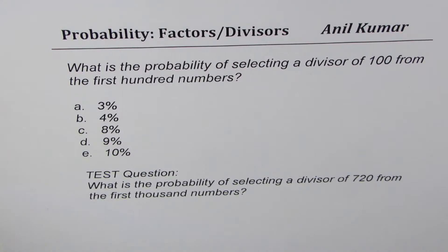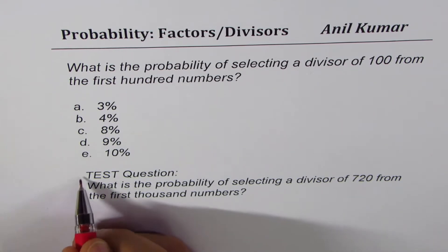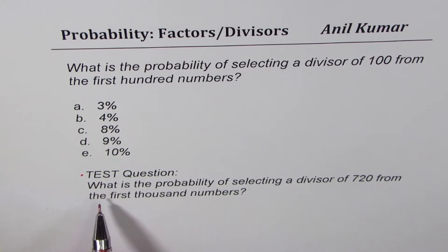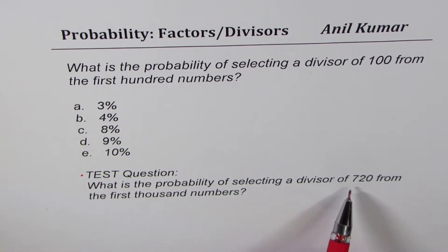I'm Anil Kumar, sharing with you a question on probability based on factors and divisors. The question is: what is the probability of selecting a divisor of 100 from the first hundred numbers? Five options are given: 3%, 4%, 8%, 9%, and 10%. The test question for you is: what is the probability of selecting a divisor of 720 from the first thousand numbers?